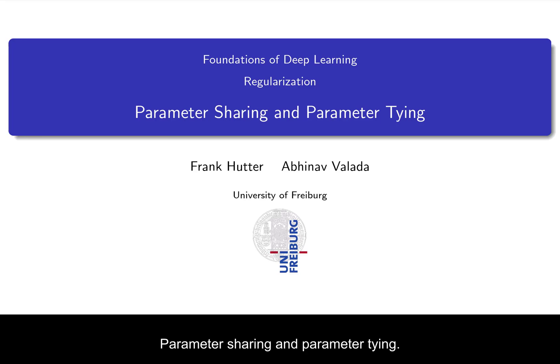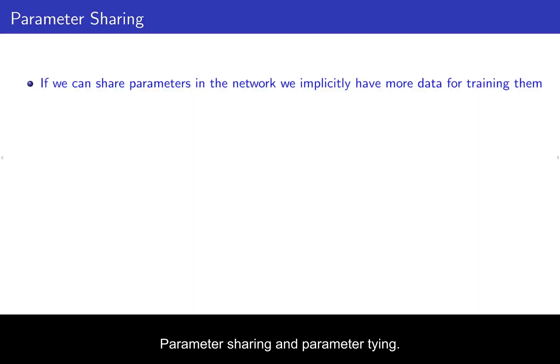Parameter sharing and parameter tying. One big reason to use parameter sharing across different parts of our neural network is that if we can do so, then we implicitly have more data for training these parameters, because different parts of the neural network can help in training these parameters.